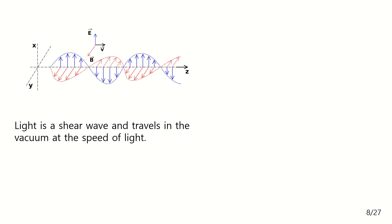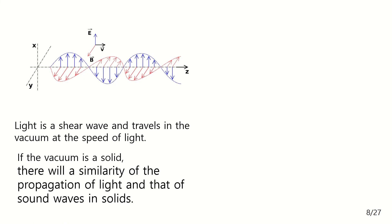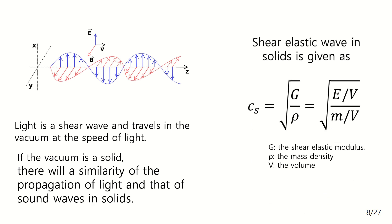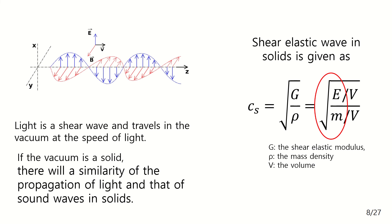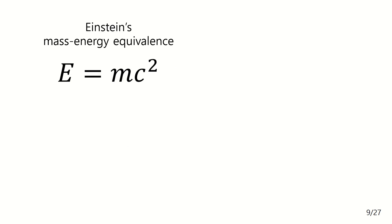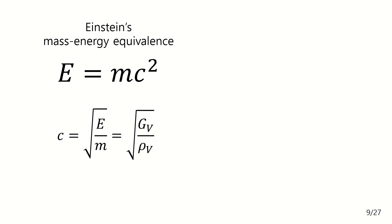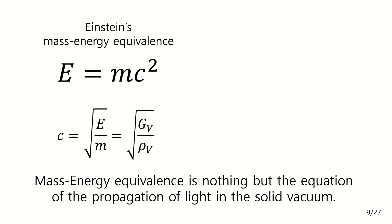You know that light is a shear wave and propagates in the vacuum at the speed of light. If the vacuum is solid, there will be a similarity between the propagation of light and that of sound waves in solids. Sound waves are divided into pressure waves and shear waves. The speed of a shear wave in a solid is proportional to the square root of the shear modulus divided by the mass density. If we remove the volume term in this equation, we have E = mc². It is very familiar to us. It has the same form as Einstein's mass-energy equivalence. From this equation, we can have a formula for the speed of light in the solid vacuum. So, mass-energy equivalence is nothing but the propagation of light in the solid vacuum.